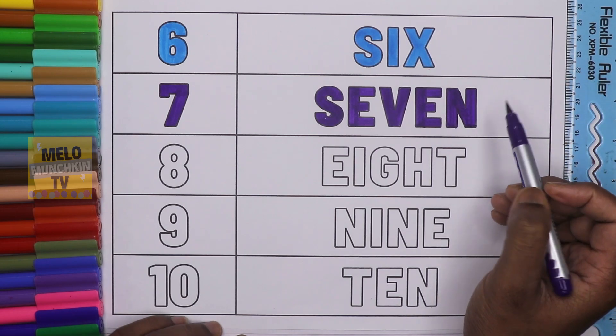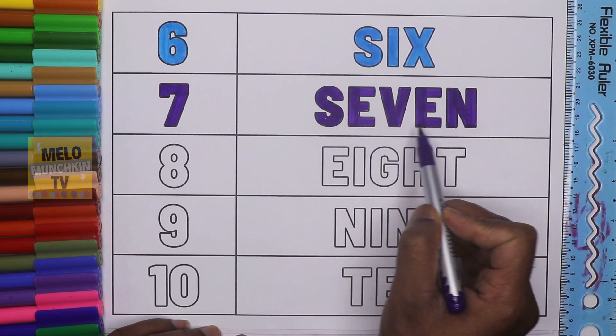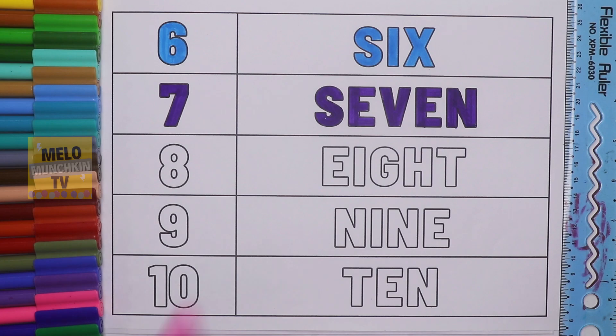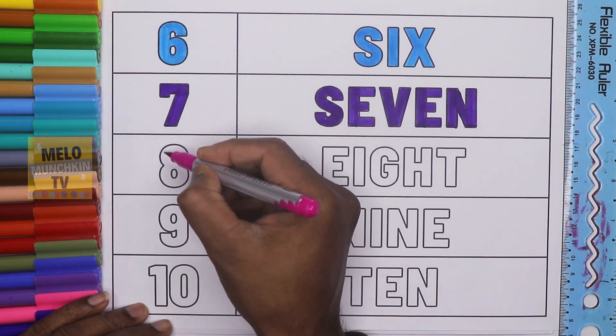So let's repeat the spelling once again. S-E-V-E-N. 7. Okay, now I'll take dark pink color to write number 8. This one is number 8.